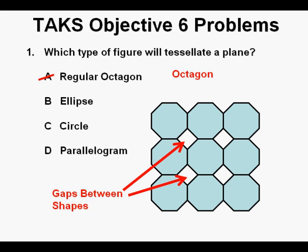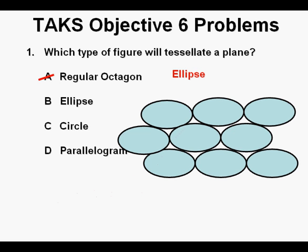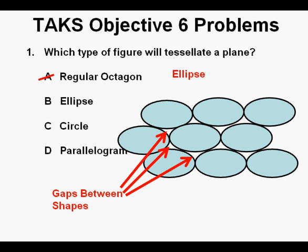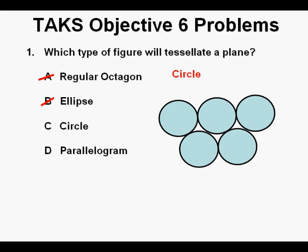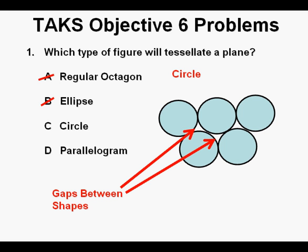Now we try answer B, the ellipses. And we see that no matter how tightly we pack the ellipses, we still have gaps between the shapes. So that eliminates answer B as well. Next, we try the circle. And we still have the gaps between the shapes. So we cross off answer C.